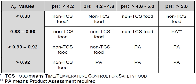Potentially hazardous food has been redefined by the U.S. Food and Drug Administration in the 2013 FDA Food Code to Time, Temperature Control for Safety Food. Pages 22 and 23 state the following: Time, Temperature Control for Safety Food means a food that requires time, temperature control for safety to limit pathogenic microorganism growth or toxin formation.